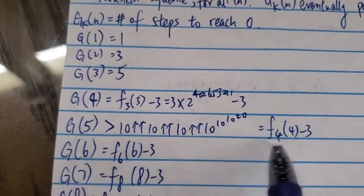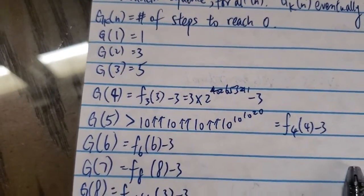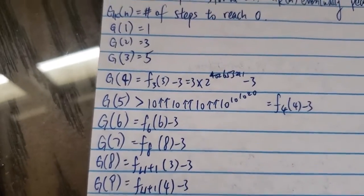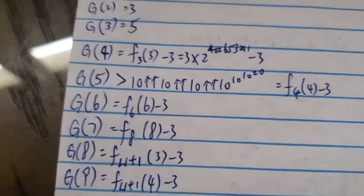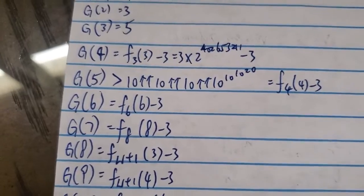And for 5, it takes this many steps to reach zero. Already beyond anything in physics, basically. Because the biggest number in physics is the Poincaré recurrence time.